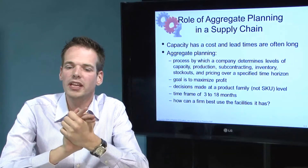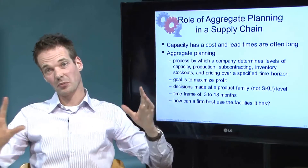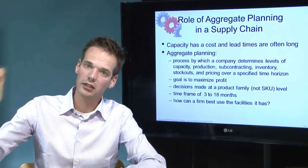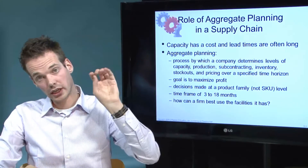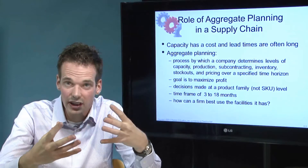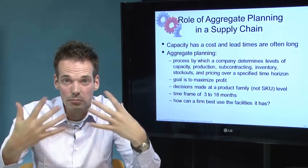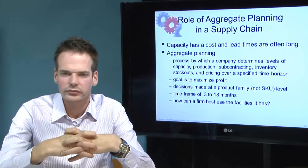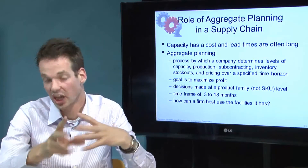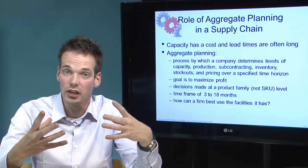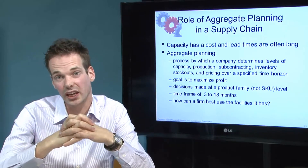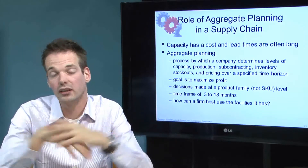If we want to make an aggregate plan, it is best made for all five steps in the supply chain — from supplier, manufacturer, distributor, retailer, and consumer. What we like to achieve is profit maximization. With profit maximization, you could also translate that into cost minimization — we want minimal cost — and that's also what we do in the linear programming portion coming up in a few videos.